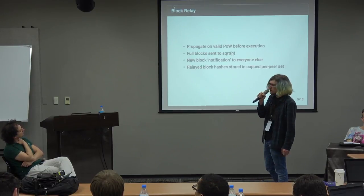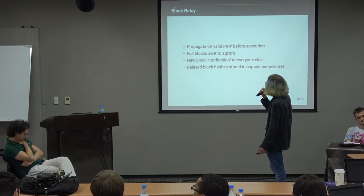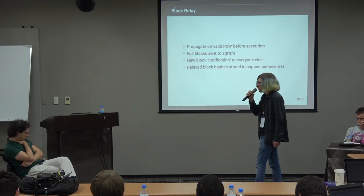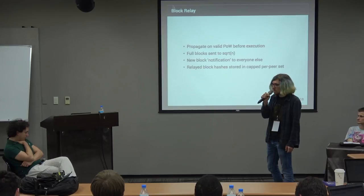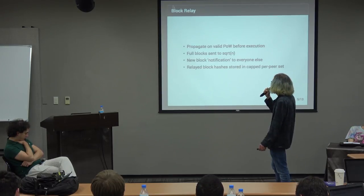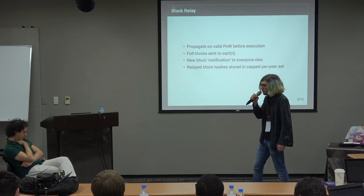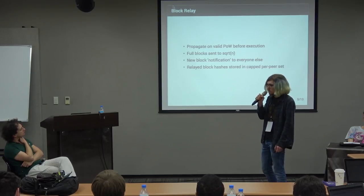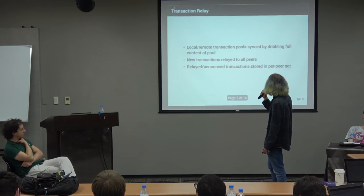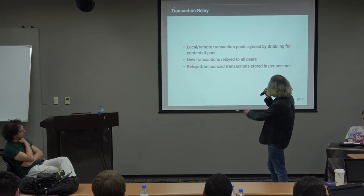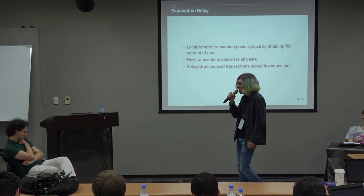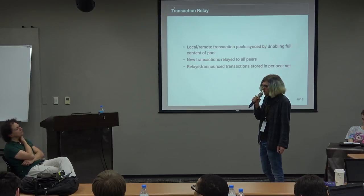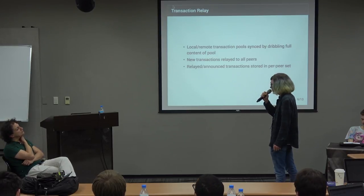Block relay is similar to Bitcoin. We propagate blocks as long as they have valid proof of work, even before executing them. The full block is sent to the square root of all current peers; for the rest, a notification is sent. Most of the time peers will have already received the block. For transactions, we maintain a set of recently seen items, and at the start of a connection we dribble all known transactions from both sides.